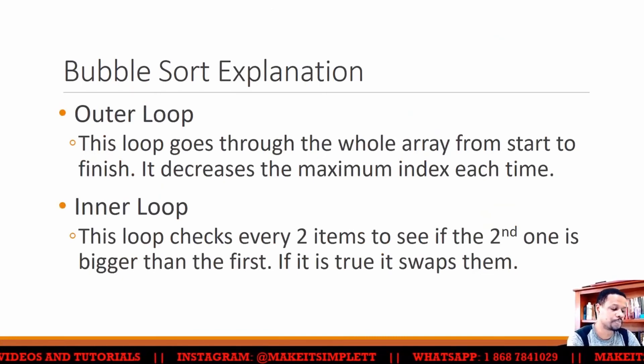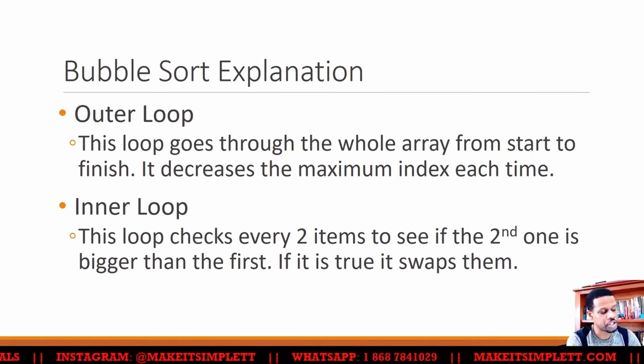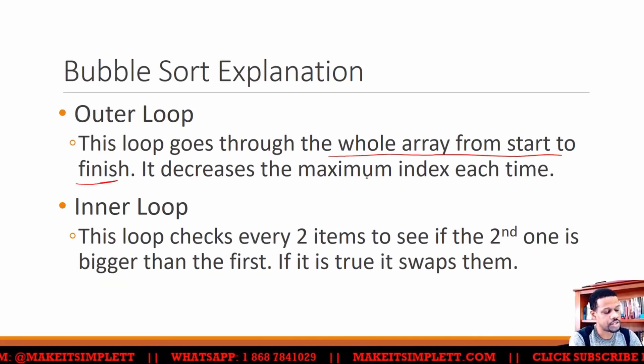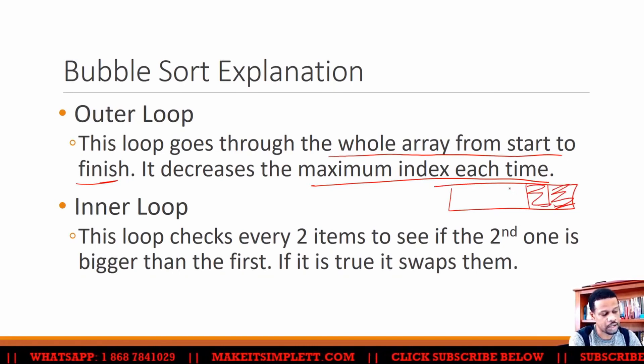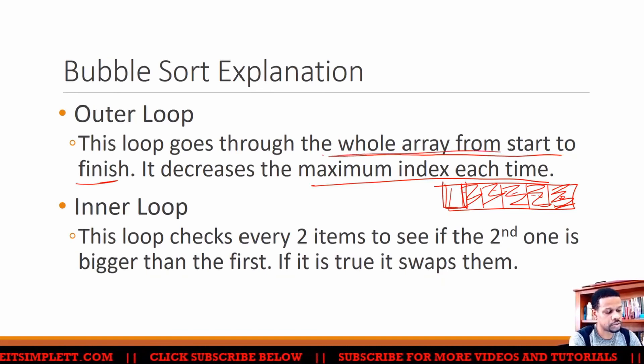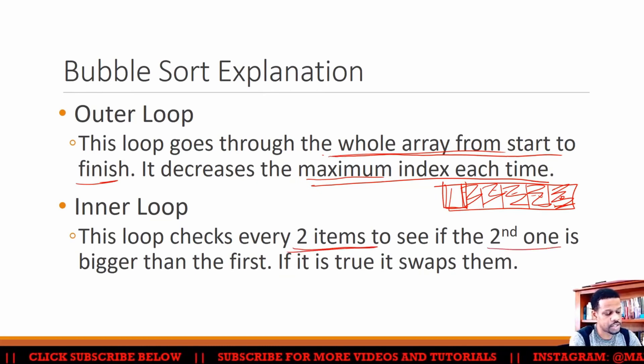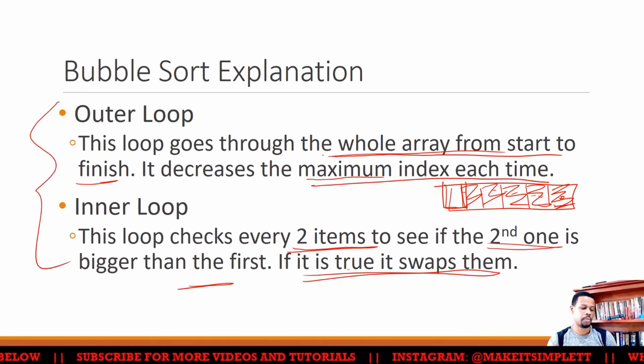So the explanation for it - there's an outer loop. Many times they're asking questions about the explanation of how it works. So the outer loop goes through the whole array from start to finish and decreases the maximum index each time. Basically, meaning that it will start off looking for this value here, but then it'll lock that off, then it'll lock that off, until you have only one value inside. Once you have one value inside, that means automatically this will be the highest going down. So the goal of this one is to check through the whole array and decrease the maximum index. The inner loop, however, checks every two items to see if the second one is bigger than the first. If it's true, then it swaps. So this is your six-mark explanation for bubble sort.